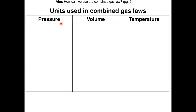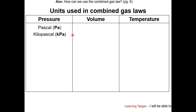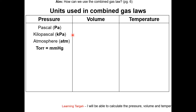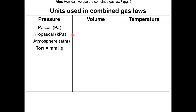We'll first go over the units used in the combined gas laws. For pressure, the units are Pascal, kilopascal, atmosphere, and torr, which is equal to millimeters of mercury. Torr comes from Torricelli, from the video.